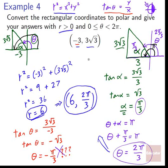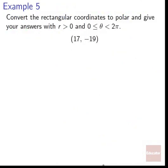Example 5: convert 17 comma negative 19 to polar with r greater than 0 and 0 ≤ theta < 2 pi. First, draw a picture: 17 out horizontally and 19 down vertically — the point is in the fourth quadrant. Our r is the hypotenuse: r squared equals 17 squared plus 19 squared, which simplifies to r equals 5 root 26.